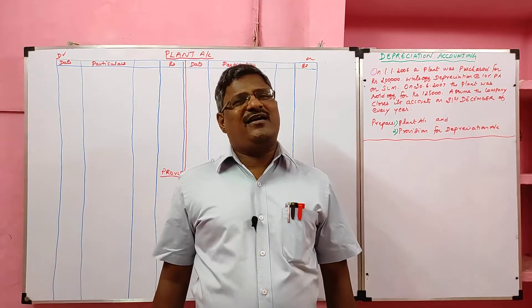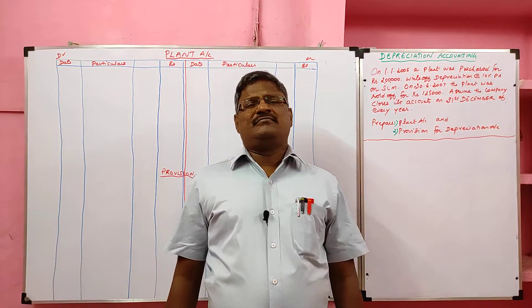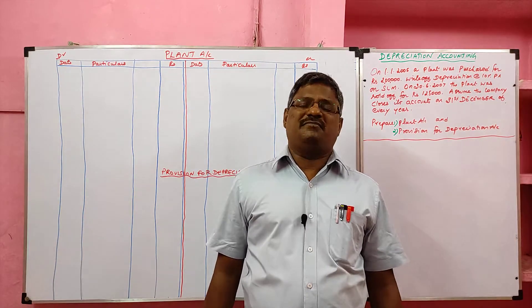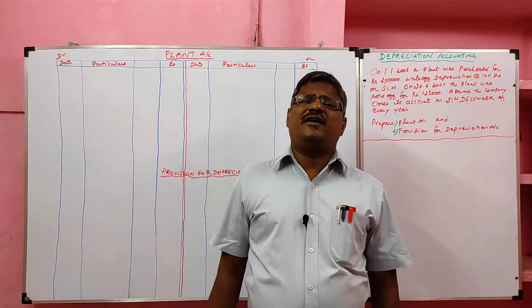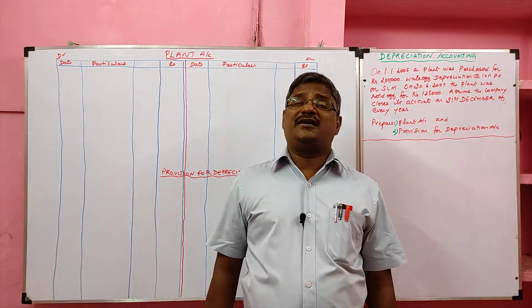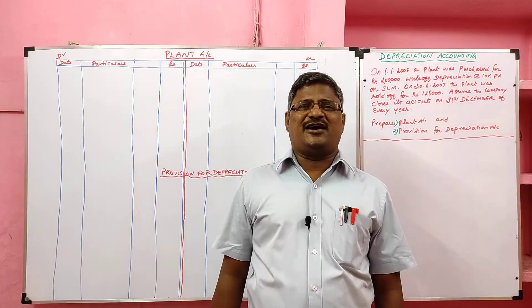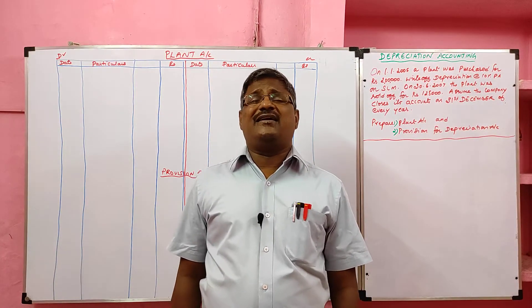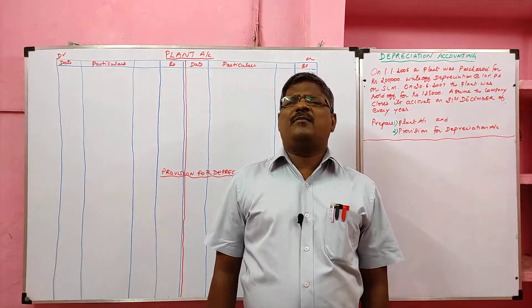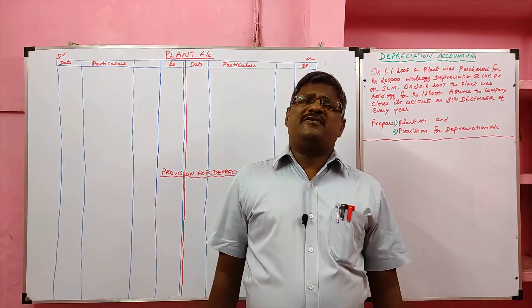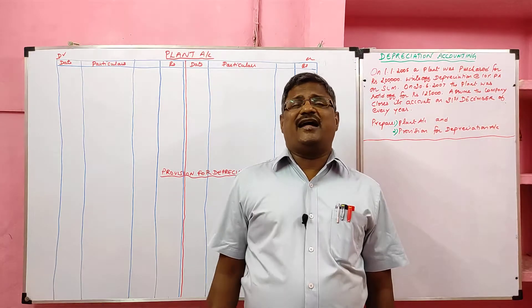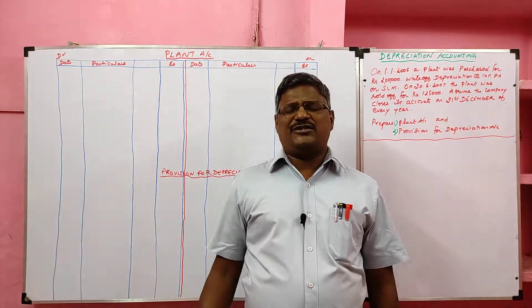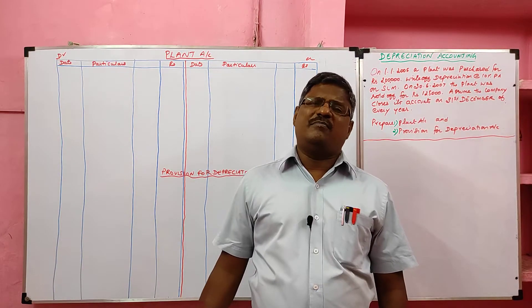In the last video we learned the depreciation method. In this video we are going to learn the provision for depreciation method. In this method, the depreciation is transferred to the provision for depreciation account, not to the fixed asset account. Hence the fixed asset appears in the balance sheet at its original cost, and provision for depreciation appears on the liability side under current liabilities. As usual, the depreciation is transferred to the profit and loss account.